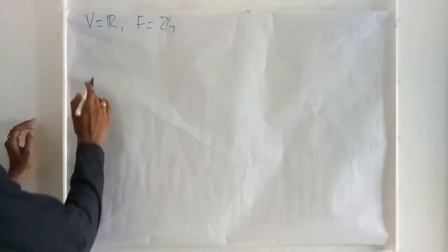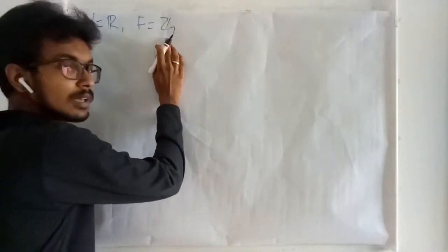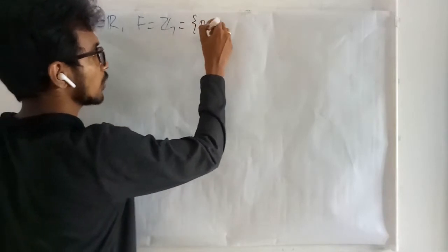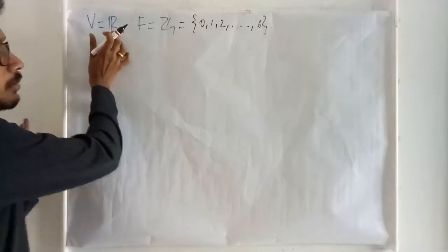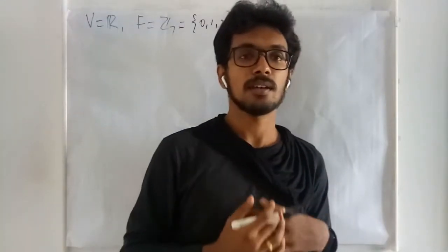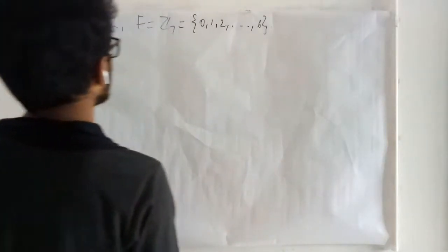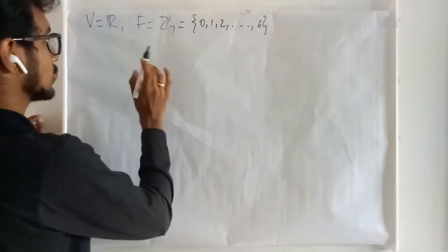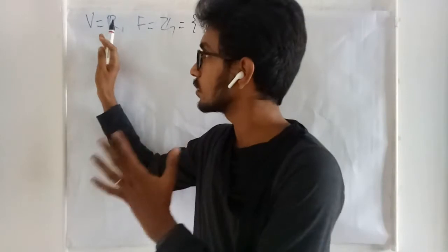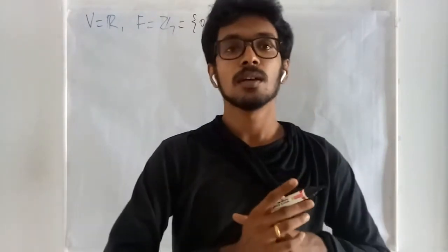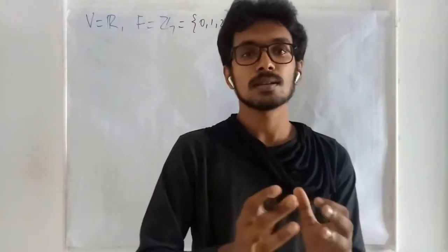Here in this lecture, let us consider V to be the set of real numbers and F to be the set of Z7. Z7 has only elements 0 through 6. We know that this is a non-empty set and we know this is a field. In order to define a vector space we need a non-empty set and a field. Addition and scalar multiplication are defined in the usual sense because both consist of numbers.